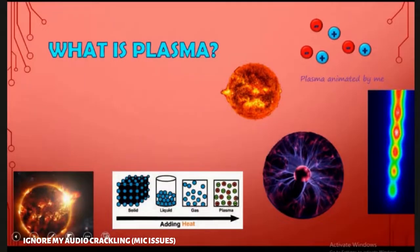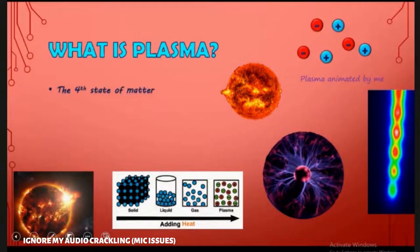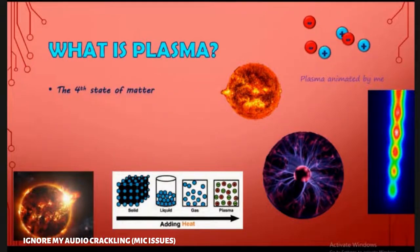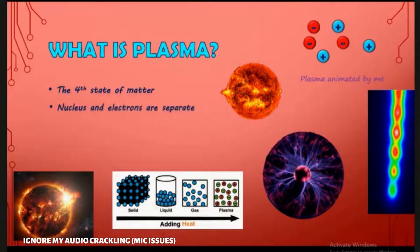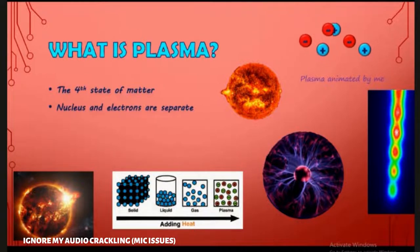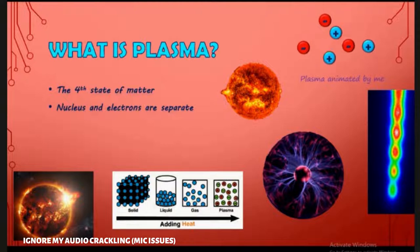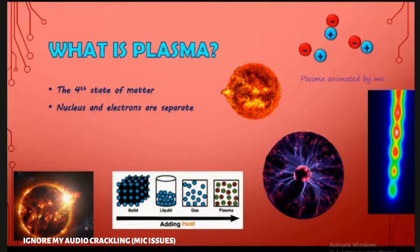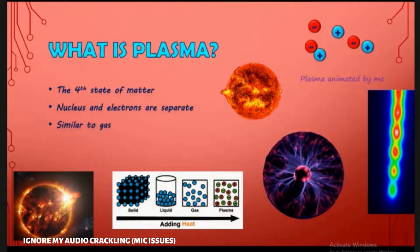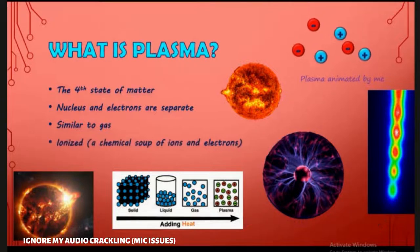What is Plasma? Plasma is the fourth state of matter. In it, the nucleus and the electrons are separated, as you can see over here in the animation. Plasma is very similar to gas, but it is ionized.